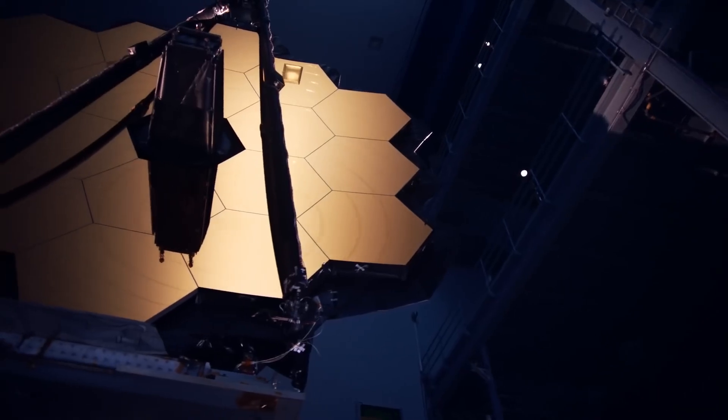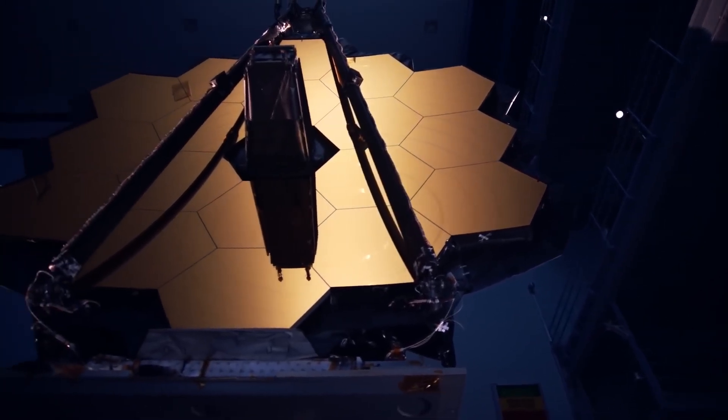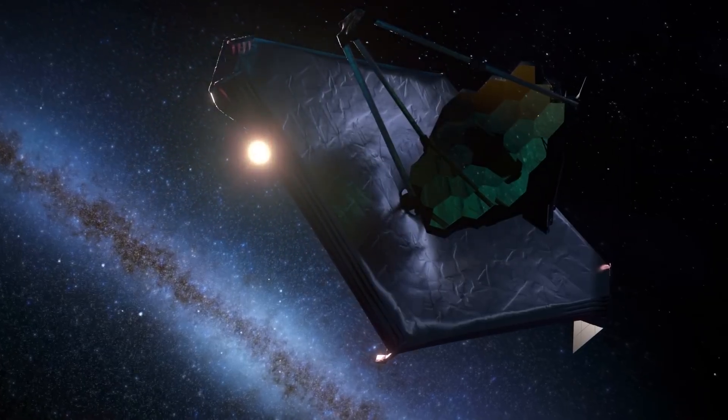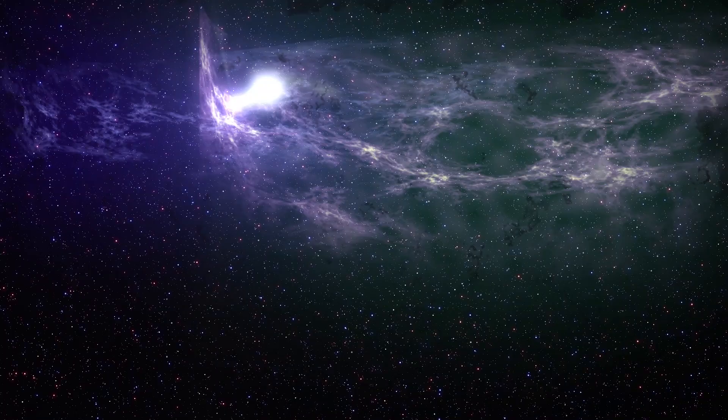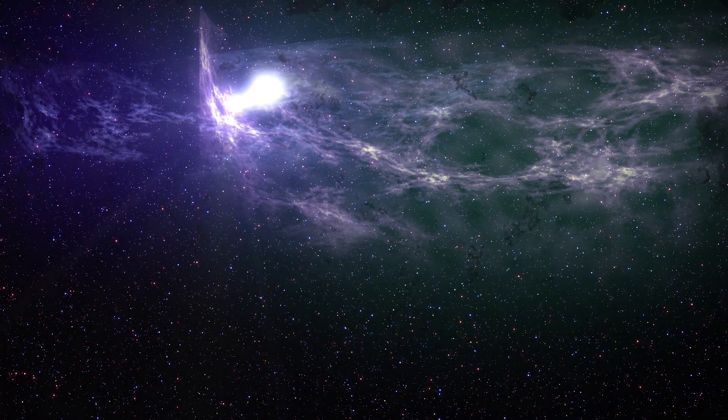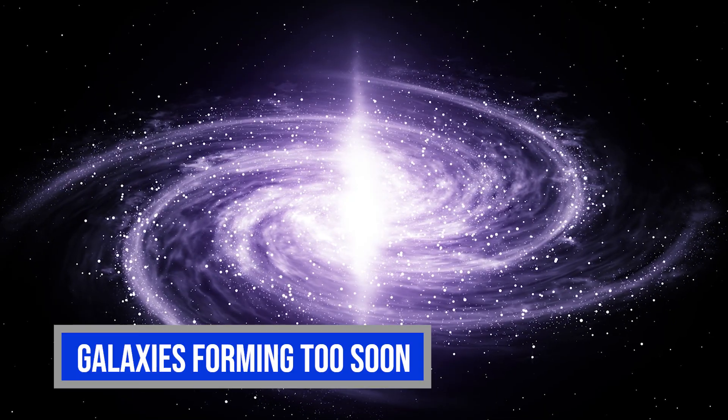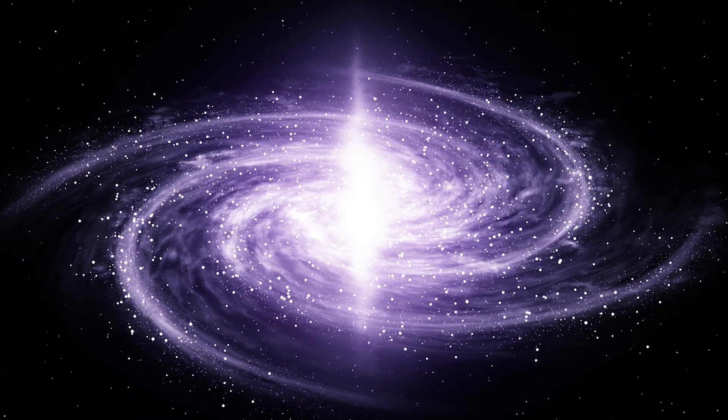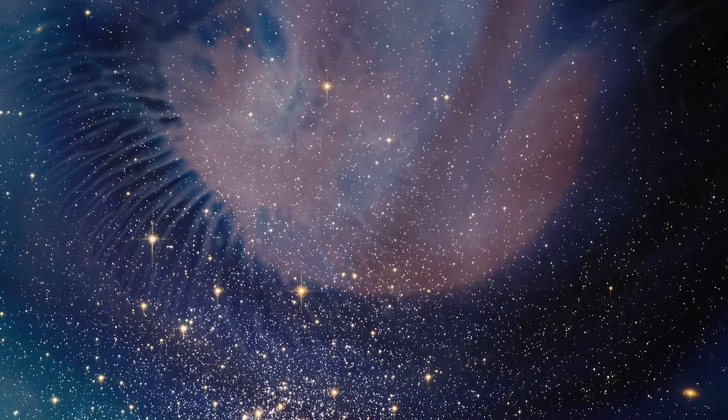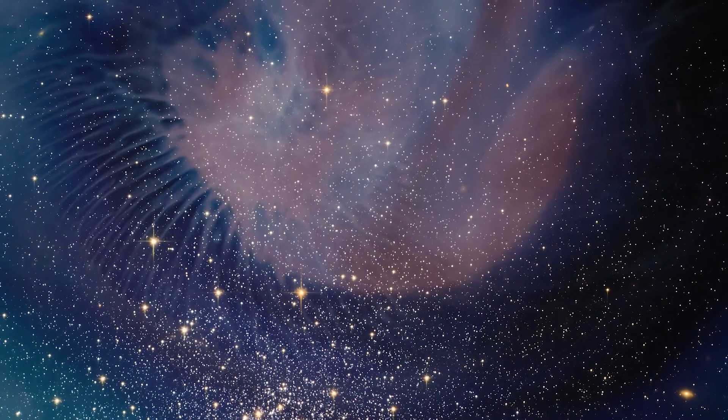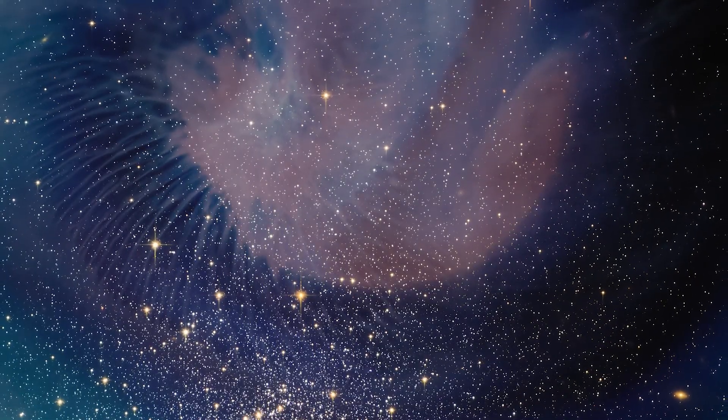So where does that leave us? The James Webb Space Telescope wasn't supposed to shatter the foundations of physics. It was meant to deepen our view, sharpen our focus, maybe confirm what we thought we already knew. But instead, it's pulled back the curtain, and what's behind it is weirder, older, and more organized than anyone expected. Galaxies forming too soon. Gravity acting strange. Dark matter looking suspiciously absent. Even the so-called baby picture of the universe, the cosmic microwave background, is now under question. It's not just one crack in the wall. It's the entire structure starting to bend.